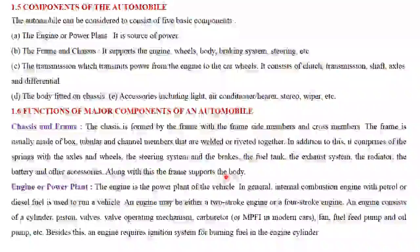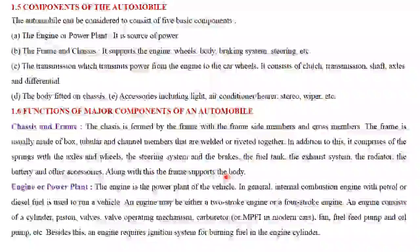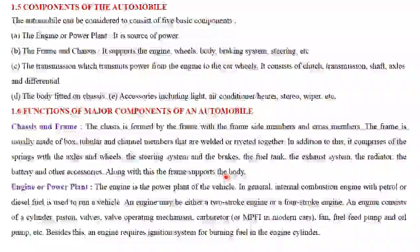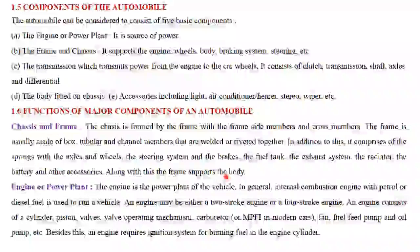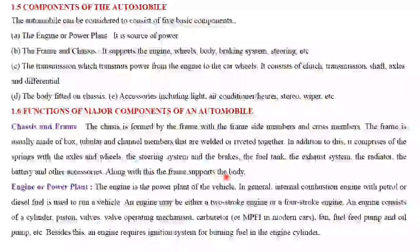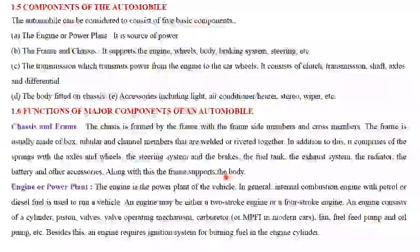Along with the chassis and frame, the suspension system is also part of the basic structure. The objectives of the suspension system are: first, to prevent road shocks from being transmitted to the vehicle components; second, to protect the occupants from road shocks; and third, to preserve stability in pitching or rolling while in motion. Suspension systems have different types, such as conventional suspension, independent suspension system, and air suspension system.